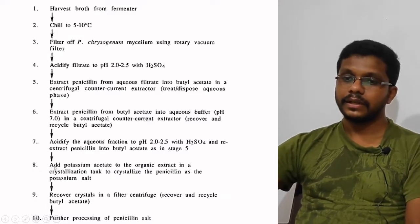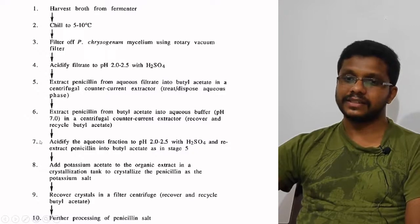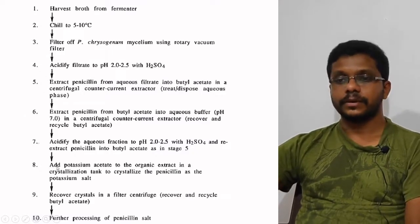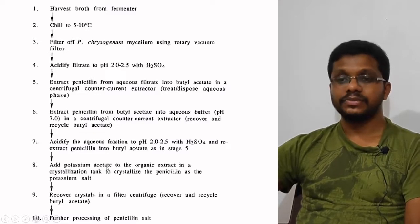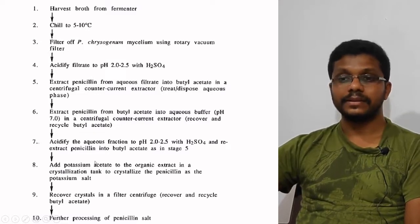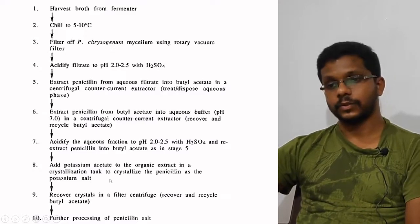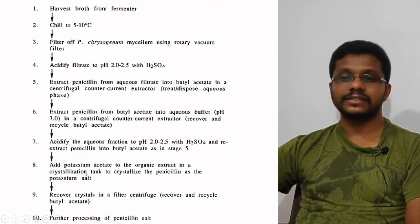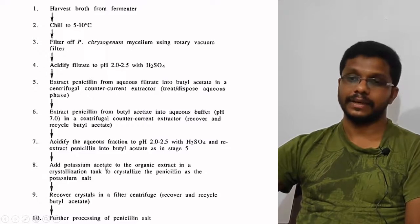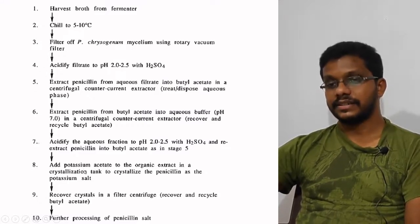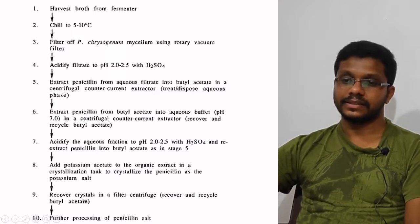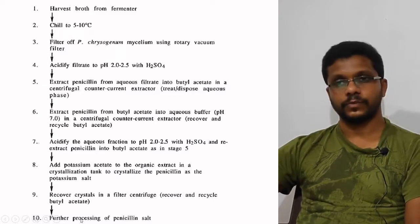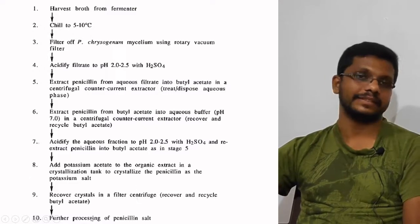Once the two extraction cycles are complete, potassium acetate is added to the medium. Adding potassium acetate causes penicillin to crystallize as its potassium salt. The crystals are recovered and used for further processing. This is the downstream processing of penicillin.